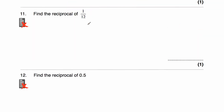Question 11: find the reciprocal of 1 twelfth. We multiply 1 twelfth by 12 to get 1, so the answer is 12. Another way: flip 1 twelfth over to get 12 over 1, which equals 12.